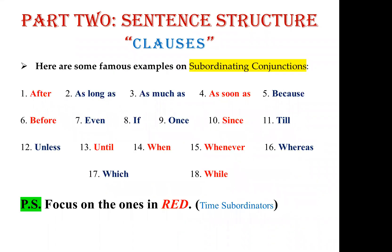Here are some subordinating conjunctions — not all are required. We will focus only on the ones marked in red in the book. Those include: after, as long as, as much as, as soon as, until, which, and while. These are the most common subordinating conjunctions in English, but in this book we focus only on the highlighted ones.